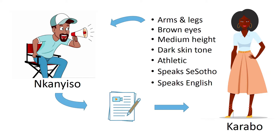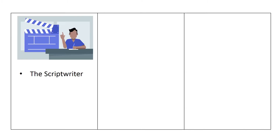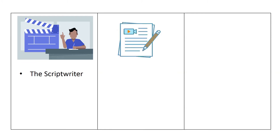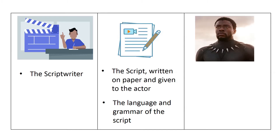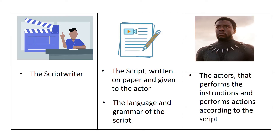The script needs to be aligned with Garabo's features and abilities. The script writer knows the end product of how the show must go, but since he is not an actor, he cannot perform the actions himself. Even if he could act, he cannot be multiple characters at the same time — therefore he needs actors to make his vision, the play, come to life. The key things to remember are: the script writer, the script written on paper and given to the actor, the language and grammar of the script, and the actor who performs the instructions.